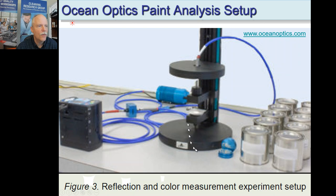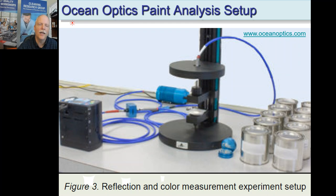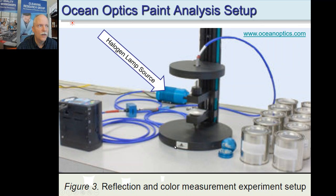Here's an example of one such setup — it has a little stage and different color standards. The source of light goes through an attenuator to prevent blinding the detector, allowing brightness adjustment. It comes down and illuminates the sample, and light returns through a bifurcated probe — one fiber going in and six fibers coming back into the spectrometer. They also show what appear to be arson cans in the scene. The setup includes the halogen lamp source, attenuator, sample, spectrometer, and black-and-white reference standards.